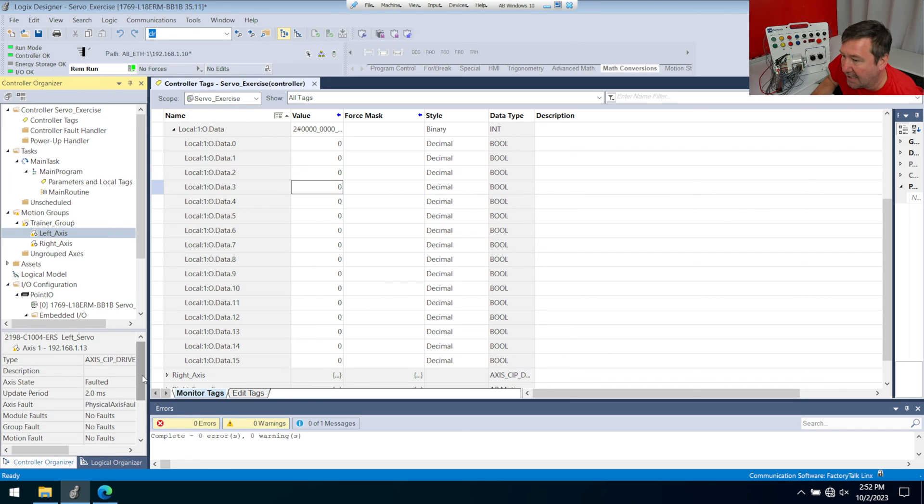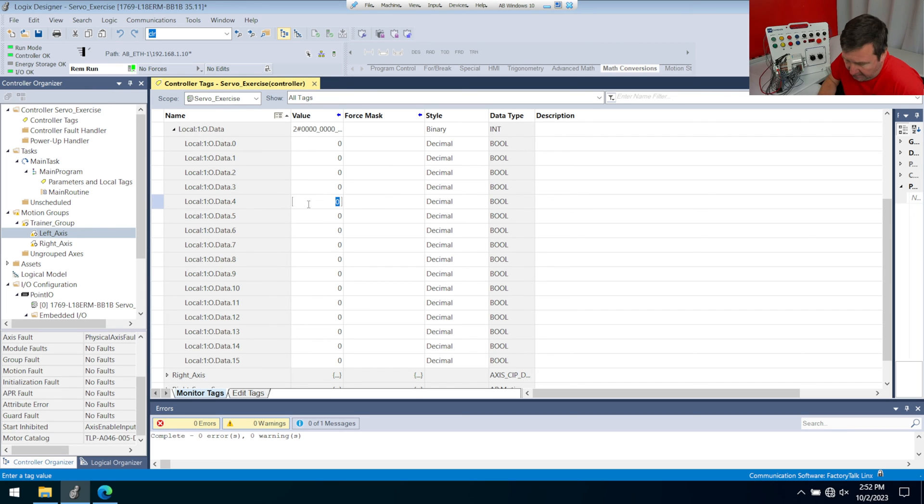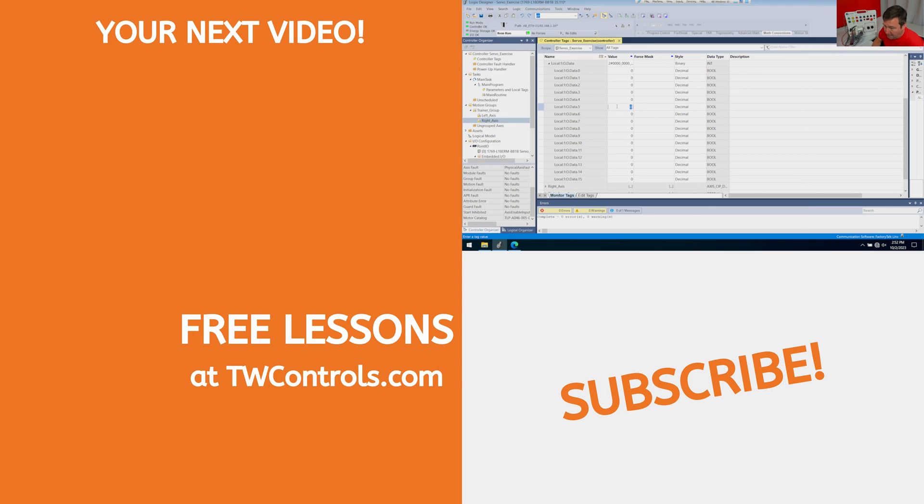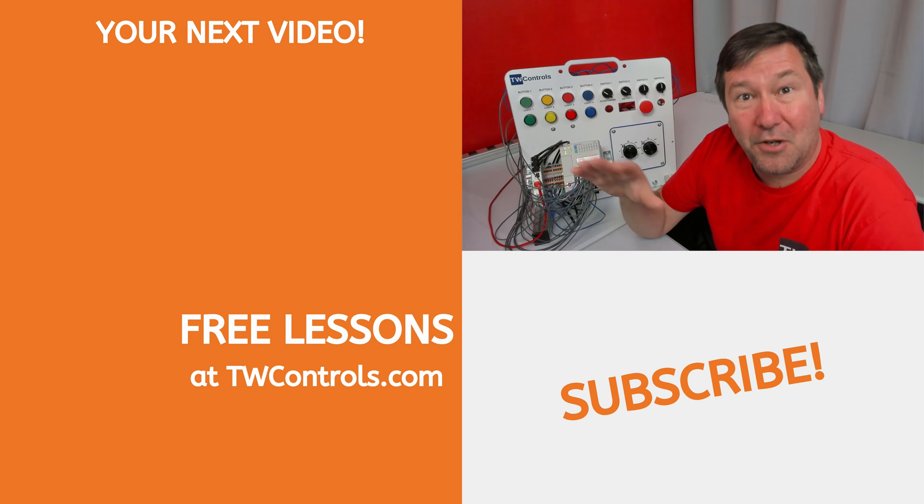I'm going to click the left axis, and I can go down and there's our axis enable input inhibit. Right now that's keeping us from starting. We're going to put a one in output four, and that tells us it's not inhibited, which means our enable signal is good. Then we'll take the right axis and we're going to put a one in output five, and now its axis is not inhibited.